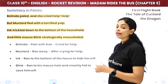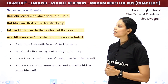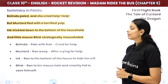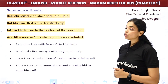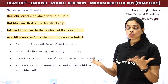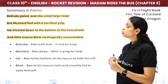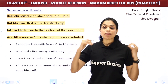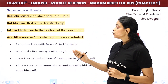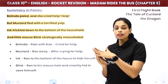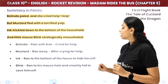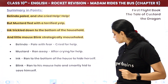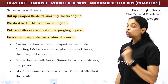Belinda paled and cried 'Help, help!' but Mustard fled with a terrified yelp. Ink trickled down to the bottom of the household and hid there. And little mouse Blink ran smartly to his mousehole to save himself. So everyone was scared and ran away to hide.